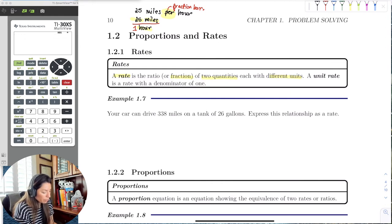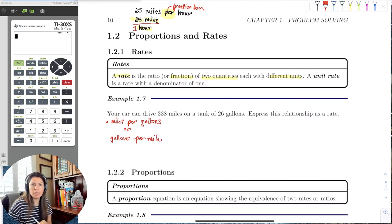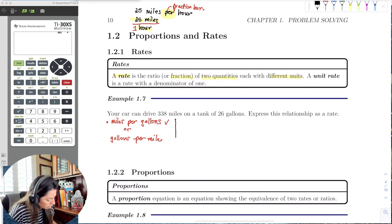So let's look at this example. Your car can drive 338 miles on a tank of 26 gallons. Express this relationship as a rate. So it doesn't tell us how to make this rate. We could essentially do, we have one of two choices. We could do the miles per gallon, MPGs as we usually see, or gallons per mile. Like how many gallons do I need per mile? So it's just up to you. We're going to go ahead and do miles per gallon just because that's what we're used to in the world.